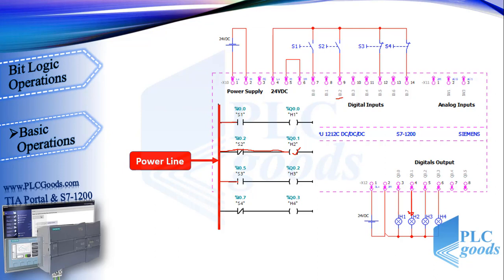The next line: virtual power can reach the normally open contact. But pay attention to the PLC wiring — in this case a normally closed push button is used, so the real 24V DC can reach the PLC input. This changes the state of I0.5 from false to true, so this normally open contact switches to closed and lets virtual power pass through and reach the output.